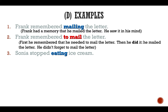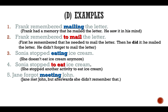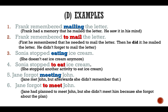'Sonia stopped eating ice cream' means she doesn't eat ice cream anymore. Instead, 'Sonia stopped to eat ice cream' means she stopped another activity she was doing in order to eat ice cream. Number five: 'Jane forgot meeting John' means Jane met John but afterwards she didn't remember it. Instead, 'Jane forgot to meet John' means Jane had planned to meet John but she didn't meet him because she forgot about the plan.